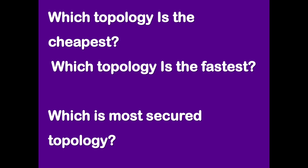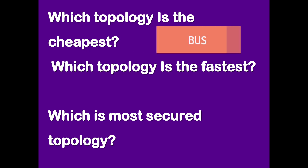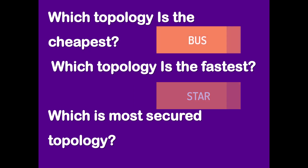Common questions arise about which topology is cheapest, fastest, and most secure. The cheapest can be Bus. The fastest topology theoretically is Mesh, but while implementing a topology in practice, the fastest is Star. And the most secure topology is Mesh.